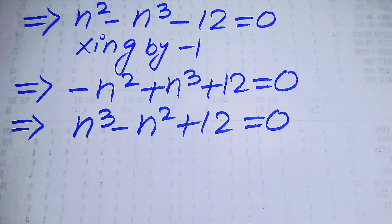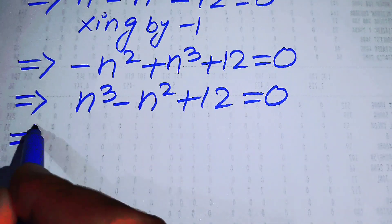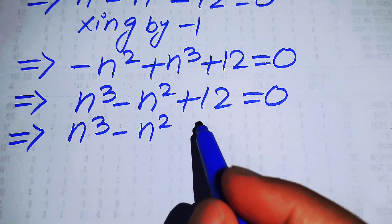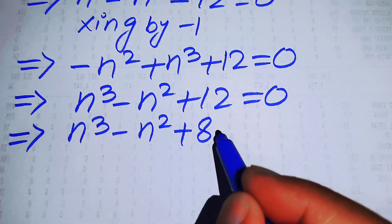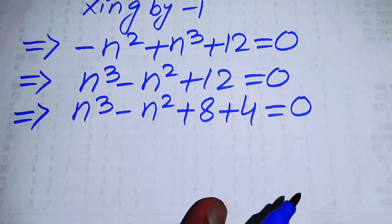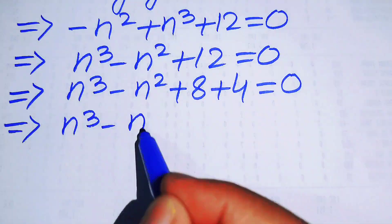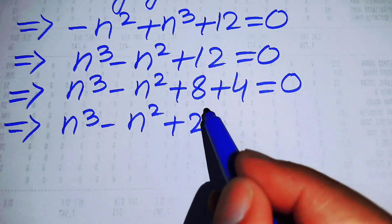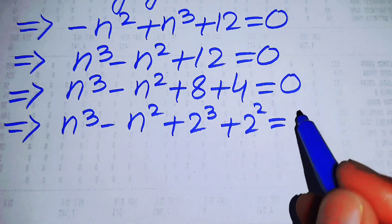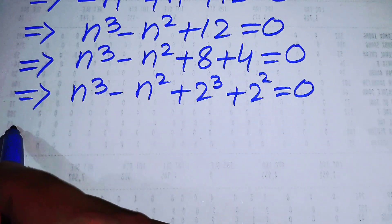We rearrange the terms to get n cubed minus n squared plus 12 equals 0. Now we solve this cubic equation. We rewrite the 12 as 8 plus 4, which is 2 cubed plus 2 squared, giving us n cubed minus n squared plus 2 cubed plus 2 squared equals 0.